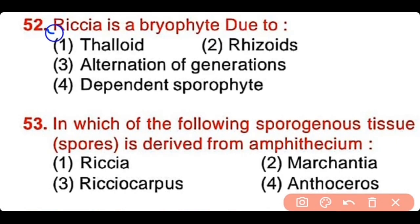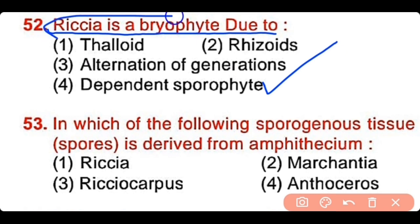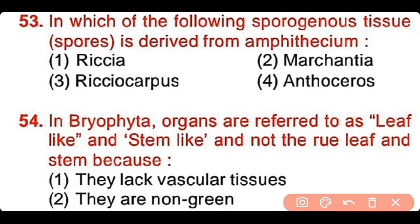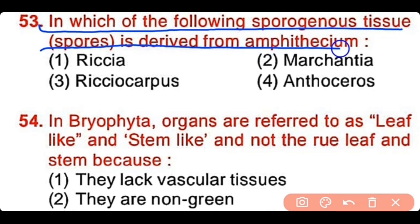Question number 52: Riccia is a bryophyte due to its colloid body, it has rhizoids, it has alternation of generations, or it has a dependent sporophyte. The correct answer is option 4 — Riccia is a bryophyte because it has a sporophyte that is dependent on the gametophyte. Question number 53: In which of the following is the sporogenous tissue derived from the amphithecium? Riccia, Marchantia, Ricciocarpus, or Anthoceros. The correct answer is option 4. Anthoceros has sporogenous tissue derived from the amphithecium.